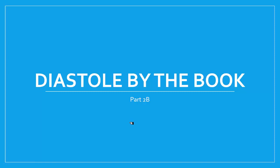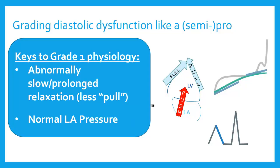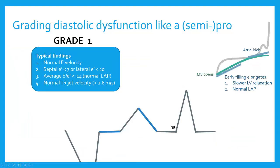This is diastology by the book, and we're going to do it like a pro — at least a semi-pro. Even if you're not a cardiologist, you can understand how they grade diastolic dysfunction. This helps if you order an echo and they tell you this stuff in the bottom of the report. So this is grade 1 physiology: you have abnormally slow, prolonged relaxation, so the pull force is diminishing, but you have normal left atrial pressure.